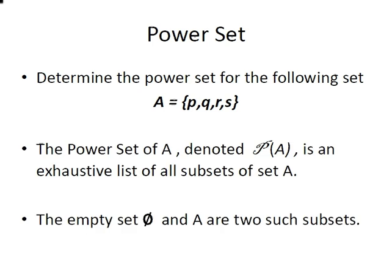The power set of A, denoted by P with this very distinctive P, is an exhaustive list of all subsets of A. Now just to be clear, exhaustive list means that we have to find each possible subset. The empty set and A are two such subsets, so A is a subset of itself.